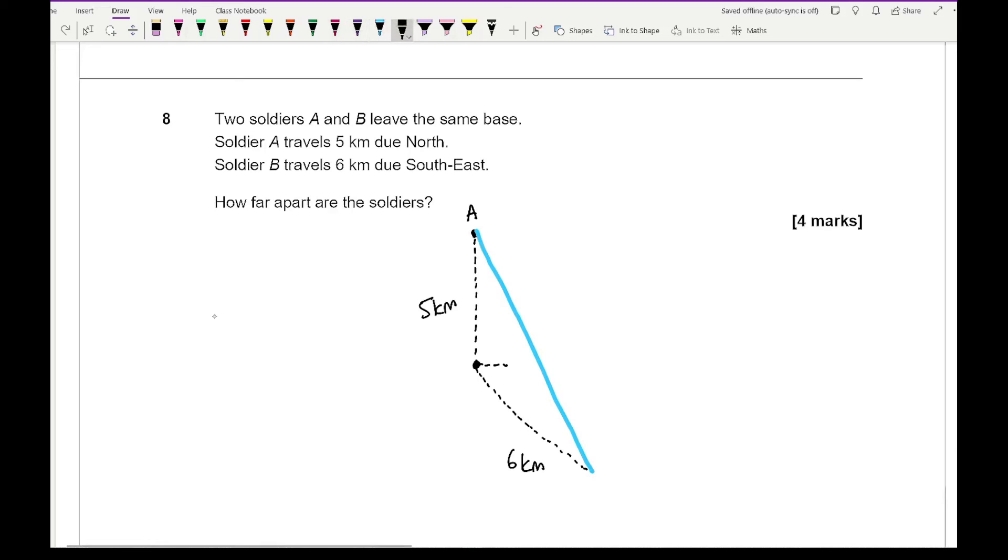Now in terms of this angle here and what the question is asking me is how long is that line there? And let's just call that. Now in terms of this angle. This angle here is 90. This angle here is 45. So this total angle is going to be 135. And so for this what I need to do is we've got three sides, one angle, and one of the sides is a x. So I need to use a cosine rule.